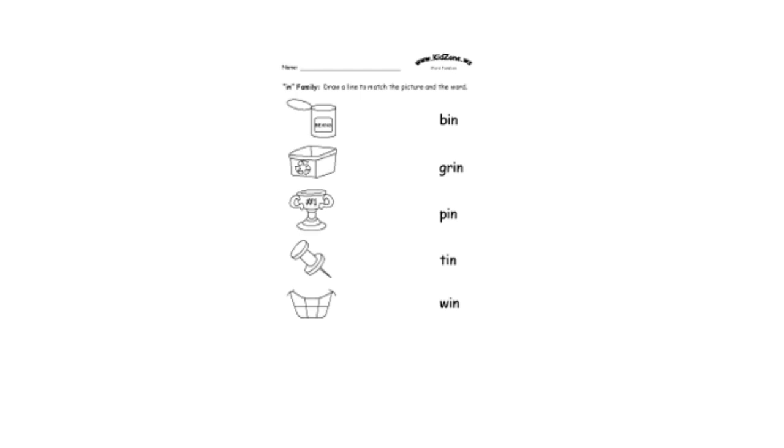Here we have to match the picture with the word. Let's start by reading the first word: bin. Where is the bin? The picture of the bin. This one. So you draw a line from bin to the picture of the bin.